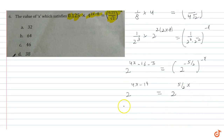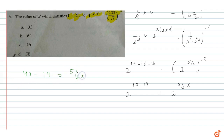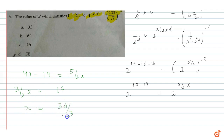Now simplifying: since both sides have the same base 2, their powers must be equal. So 4x minus 19 equals 5 by 2 times x. This gives us 4x minus 5 by 2 x equals 19, so 3 by 2 times x equals 19, therefore x is equal to 38 by 3.